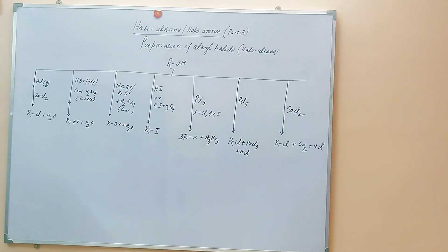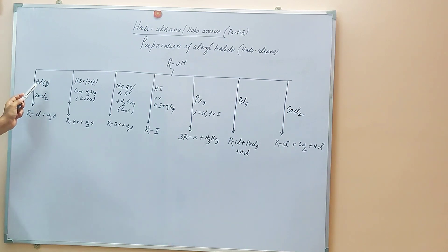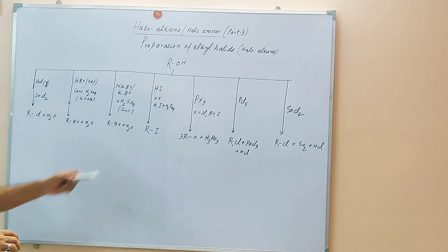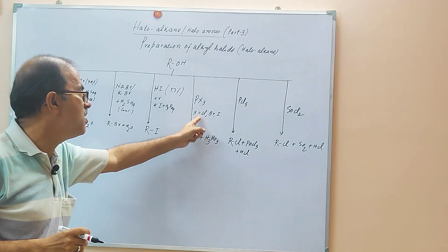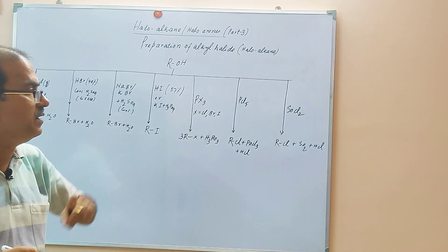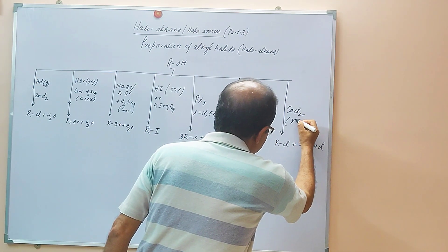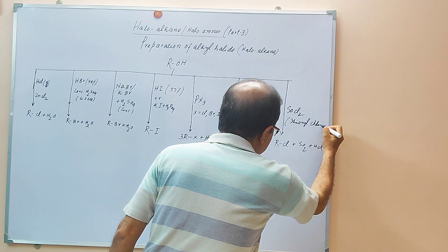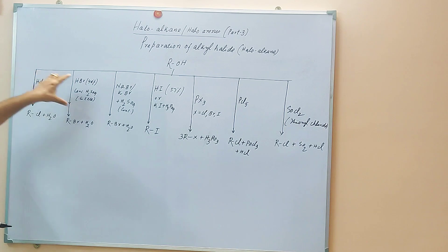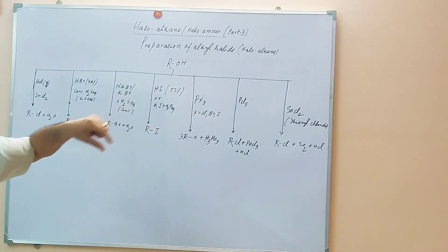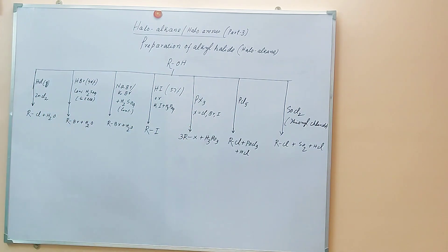This is how, in brief, you can prepare the alkyl halides from the haloacids — that is from HCl gas, HBr 48%, then HI 57%, then PX3 where X is chloride, bromine, or iodine, then PCl5 and SOCl2 — thionyl chloride.